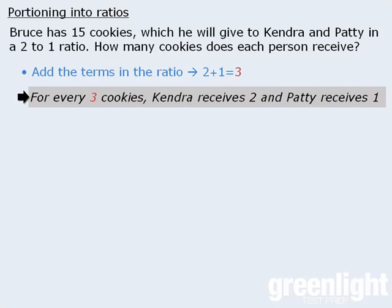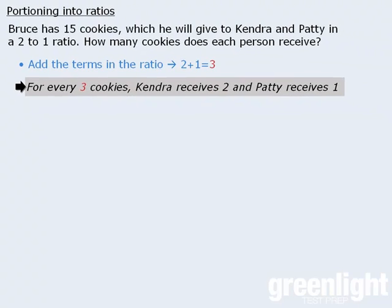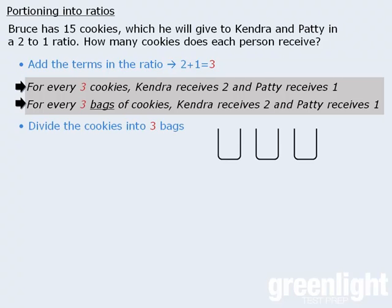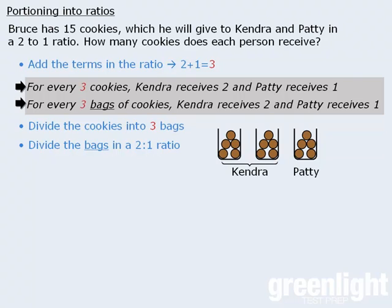This tells us that for every three cookies, Kendra receives two and Patty receives one. If we divide all fifteen cookies evenly into three bags, we get five cookies in each bag. We then divide the bags in a two to one ratio: Kendra gets two bags and Patty gets one bag. Kendra gets ten cookies and Patty gets five cookies. Notice that the ratio of ten to five equals the target ratio of two to one.